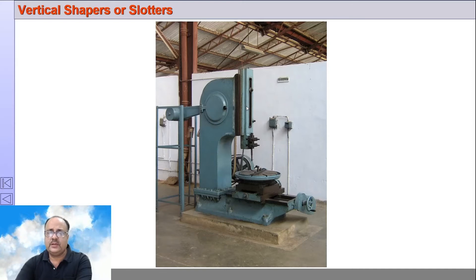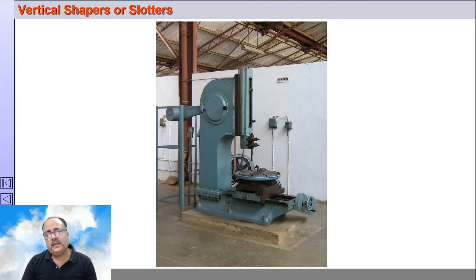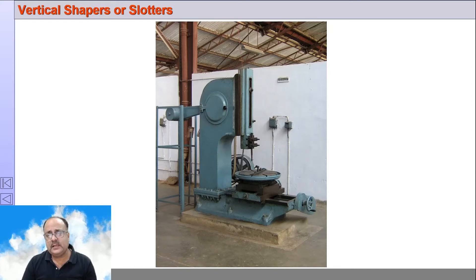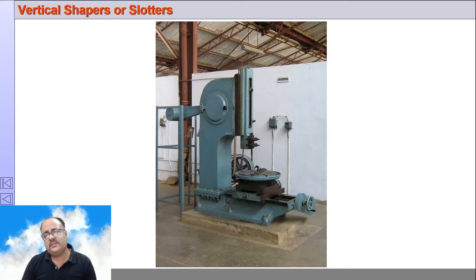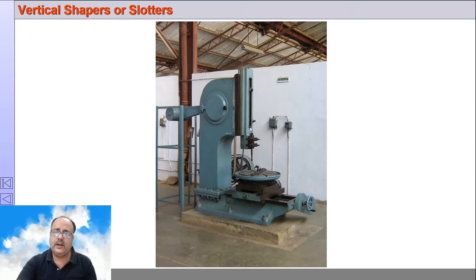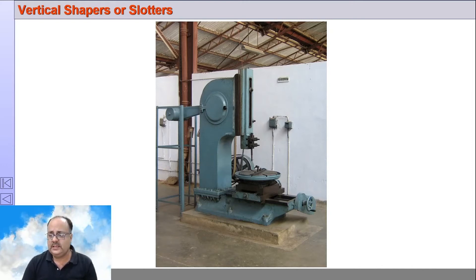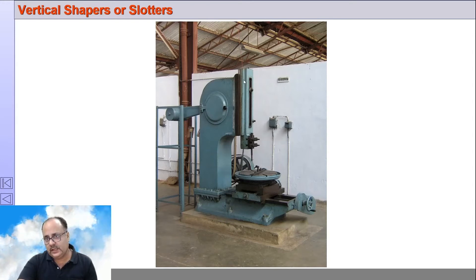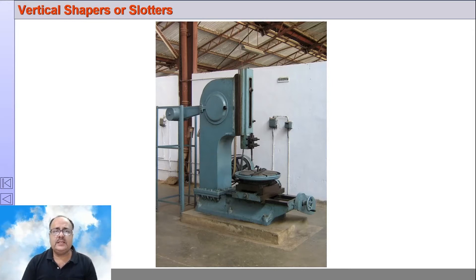Some differences between the shaper and slotter: the shaper is horizontal whereas the ram travels vertically in a slotter. The shaper has a rectangular table whereas there is a circular table in case of a slotter. Because of the circular table, circular feed can be given and circular surfaces can be machined. Because of the nature of the ram moving up and down, internal surfaces can be machined on a slotter, which is not possible in a shaper machine. The slotter machine also has a counterweight to balance the downward weight of the ram.